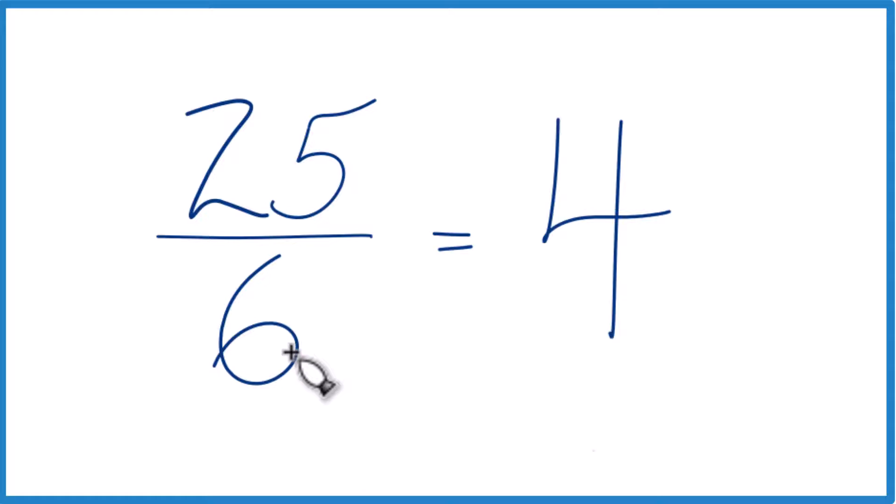4 times 6, that's our 24, with a remainder of 1. And then we just bring the 6 across. And 25/6 is equal to the mixed number 4 and 1 sixth.